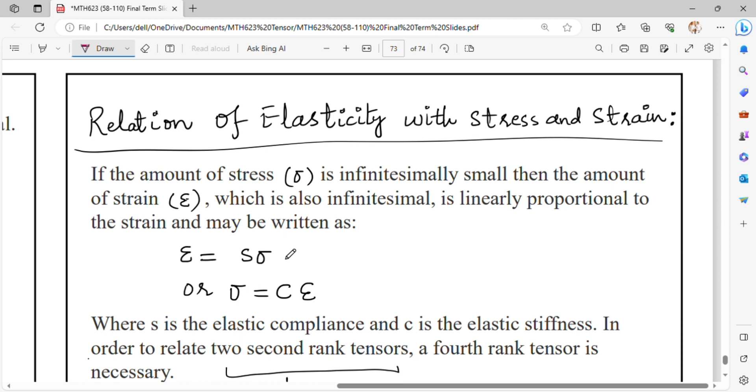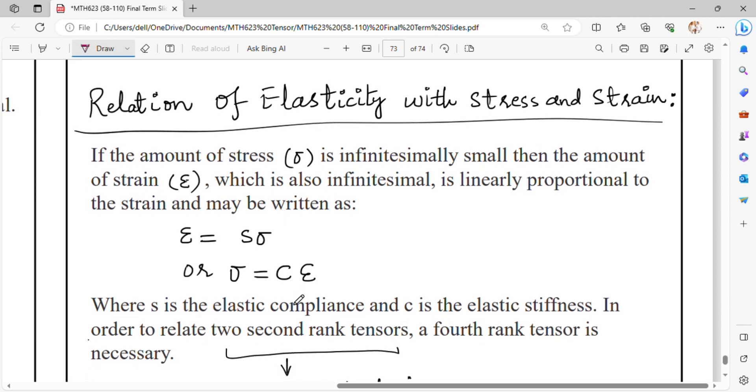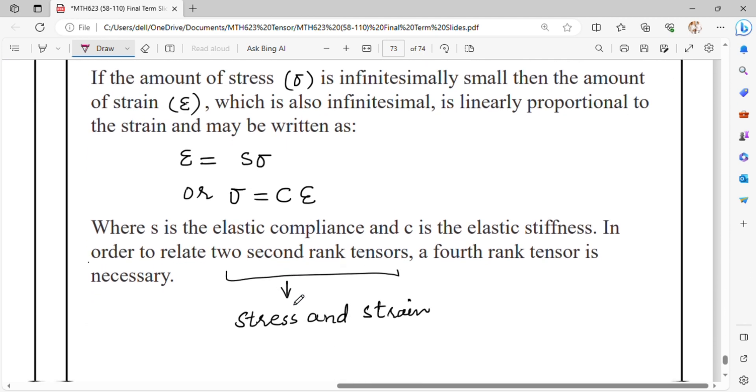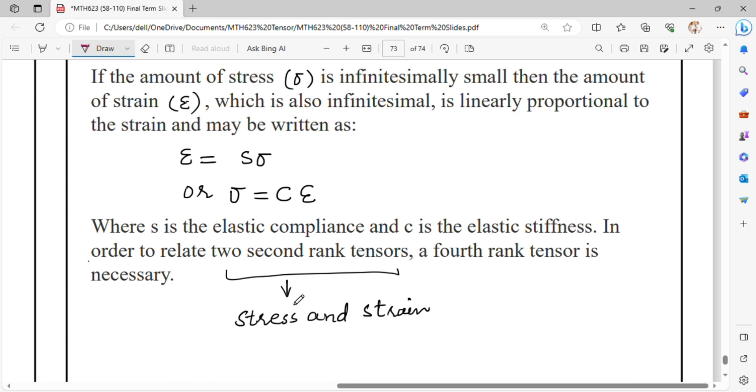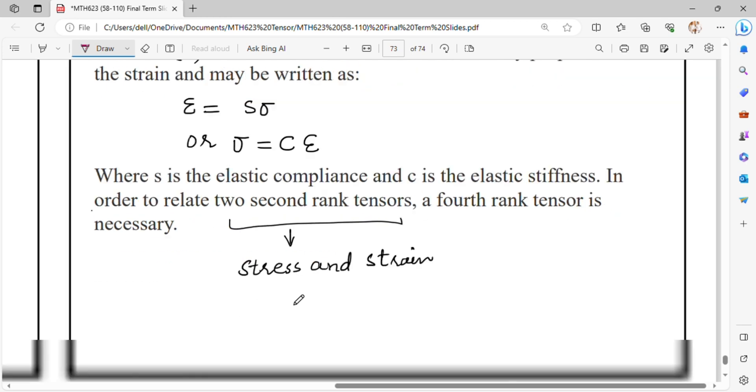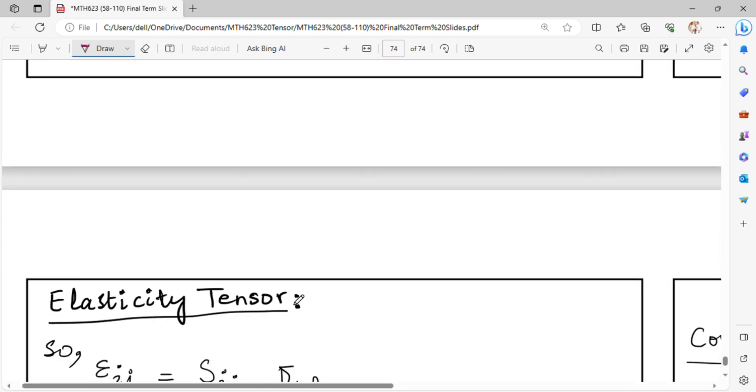Sigma and epsilon are proportional to each other. When epsilon is proportional to sigma, we use the constant S. When sigma is proportional to epsilon, we use C. In order to relate two second-rank tensors like stress and strain, a fourth-rank tensor is necessary.